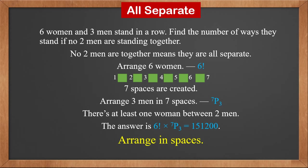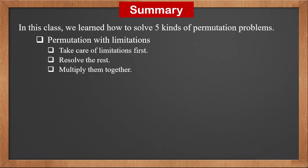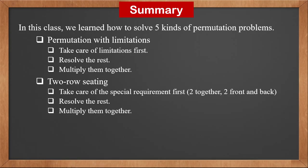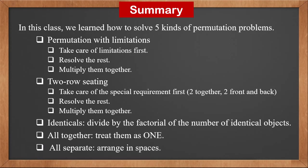The way to solve all-separate problems is to arrange in spaces. In this class, we learned how to solve five kinds of permutation problems: (1) Permutation with limitations — take care of limitations first, resolve the rest, then multiply. (2) Two-row seating — handle the special requirement first, resolve the rest, multiply. (3) Identicals — divide N! by the factorial of the number of each group of identical objects. (4) Altogether — treat them as one. (5) All separate — arrange in spaces.